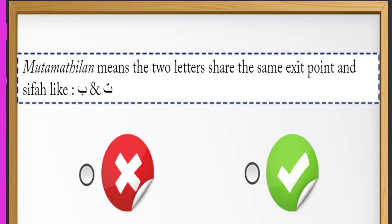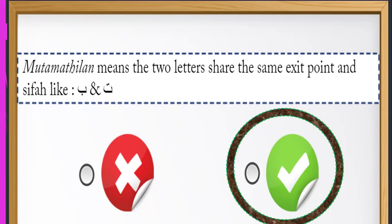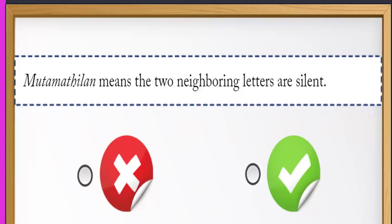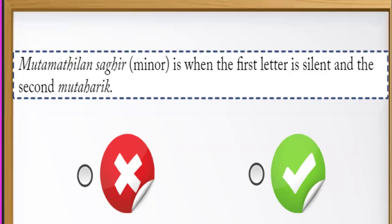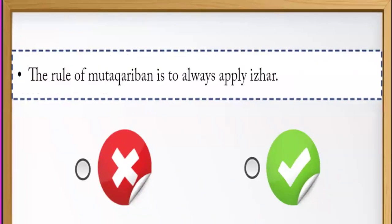More true or false: متقاربين means the two letters are silent — wrong. It must only be applied in the case of متقاربين مطلق — wrong. متماثلين صغير is when the first letter is silent and the second has حركة — true. The rule of متقاربين is to always apply إظهار — wrong, it can be either إظهار or إدغام depending on the type.